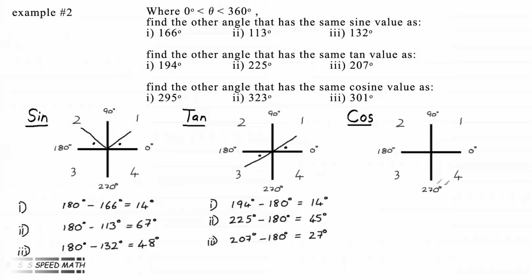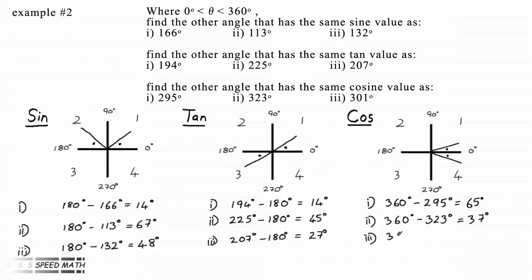All the angles in the third part are reflex and in the fourth quadrant. Their cosine values are all positive in this quadrant. They have the very same values as the acute angles in quadrant 1. The acute angle that the radius makes with the x-axis is a mirror image of the acute angle in the first quadrant, so we subtract the reflex angle from 360 degrees. Our required angles are: 360 minus 295 equals 65 degrees; 360 minus 323 equals 37 degrees; and 360 minus 301 equals 59 degrees.